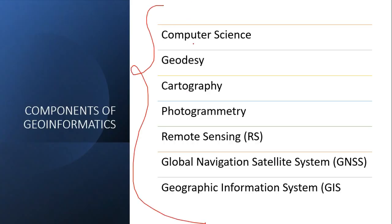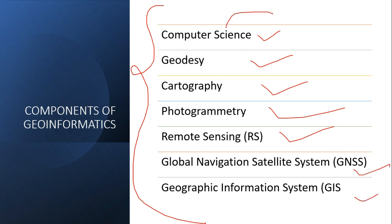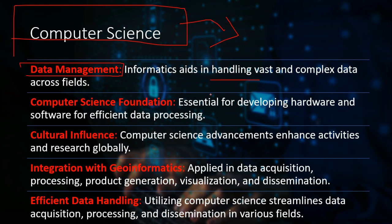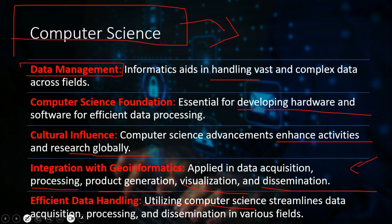The components of geoinformatics include computer science, geodesy, cartography, photogrammetry, remote sensing, GNSS, and GIS. Computer science enables development of GIS applications, handles vast and complex data, and develops hardware and software for efficient data processing. It supports data acquisition, processing, product generation, visualization, and dissemination in GIS software.